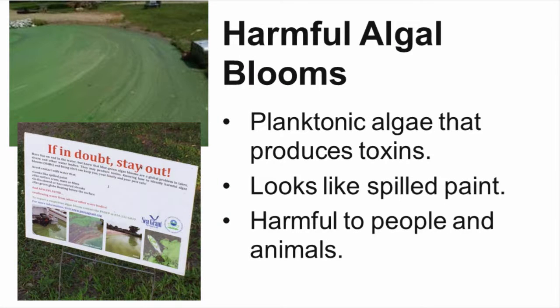Under some conditions during summer months, algae can produce toxins known as harmful algal blooms or HABs. These toxic blooms can produce dangers to animals or people that might come in contact with the water. The look of a HAB can best be described as looking like pea soup or paint spilled on the water. If you suspect a HAB in your pond, it is best to avoid the water and have the algae properly identified.